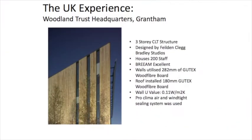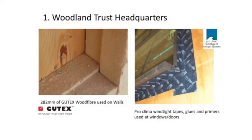Here are some projects we've been involved with using CLT in conjunction with Gutex. This is the Woodland Trust headquarters in Grantham, England — a three-storey CLT building designed by Fielding Clegg Bradley in Bath, with a BREEAM Excellent rating. On the exterior walls it used 282mm of wood fibre fixed straight to the CLT, and 180mm of wood fibre on the roof, achieving a wall U-value of 0.11 W/m·K. ProClima airtight items were also used. In the walls, combinations of boards were used to build up to the 282mm depth.